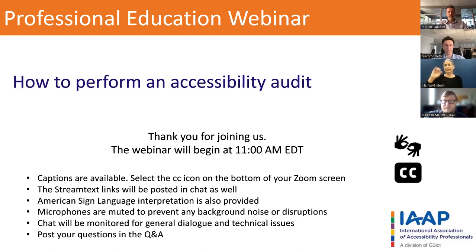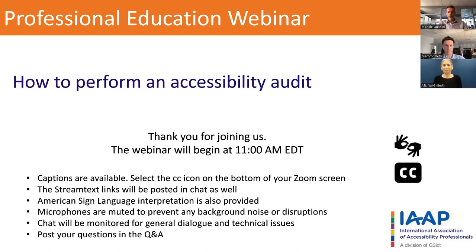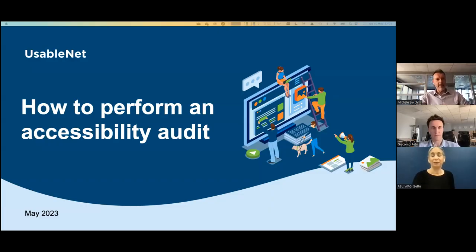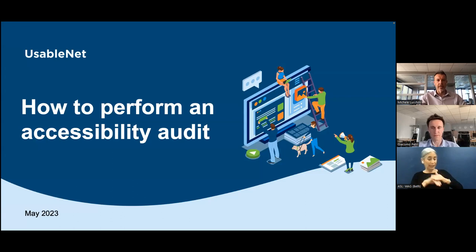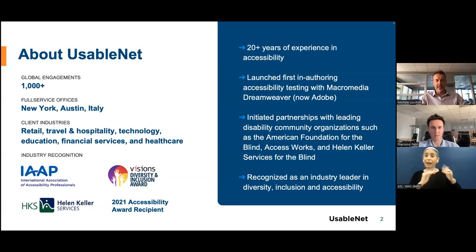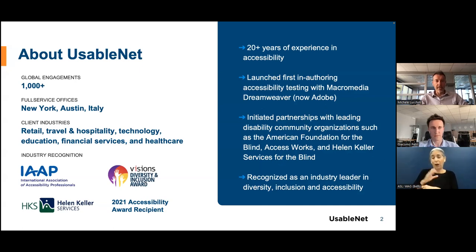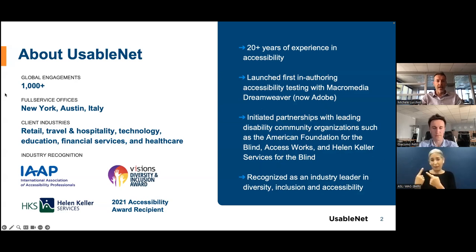Thanks for the introduction, Malcolm. Hi everyone. As presented by Malcolm, today's session will focus on how to perform an accessibility audit. In order to do some context setting, let me introduce the company Giacomo and I work for. Our company is called UsableNet, and we have been pioneering digital accessibility for over two decades, with more than 1,000 engagements and offices in New York, Austin, and the northeast of Italy, where we are broadcasting from.